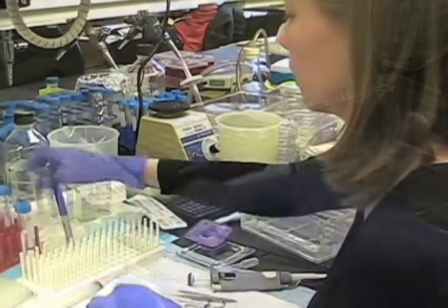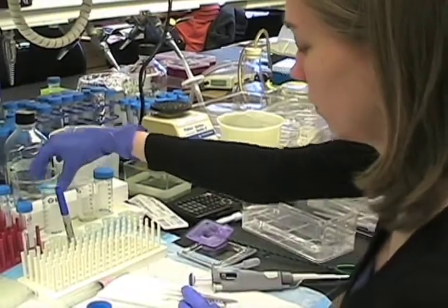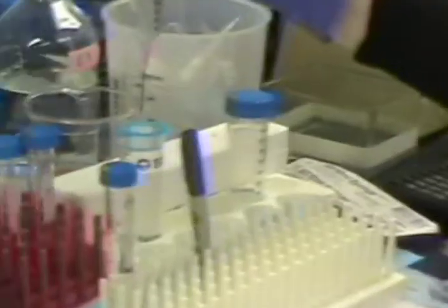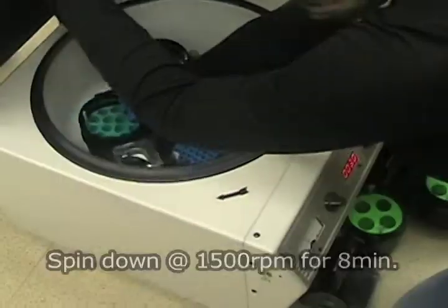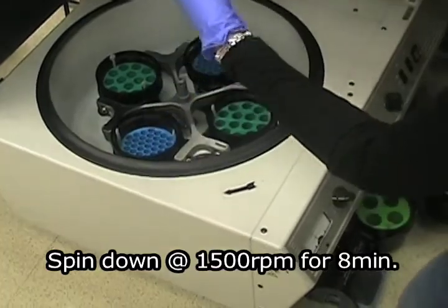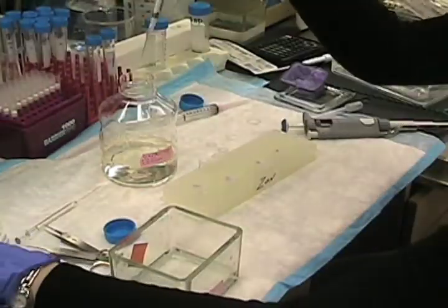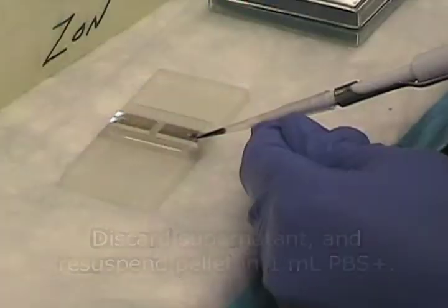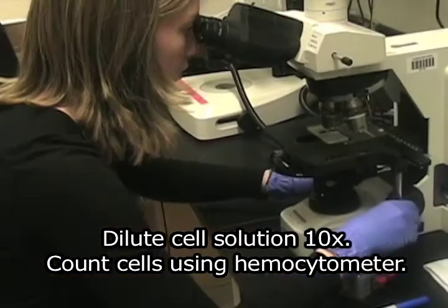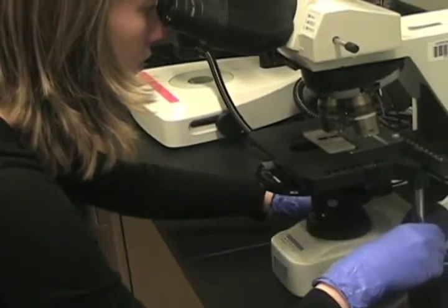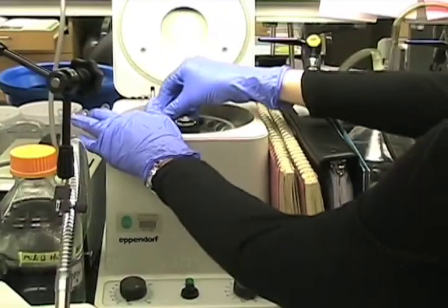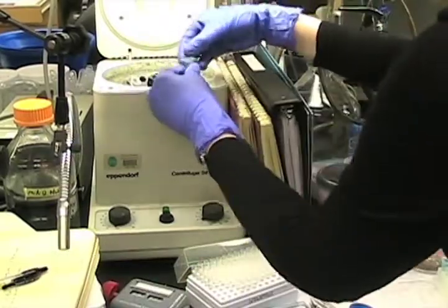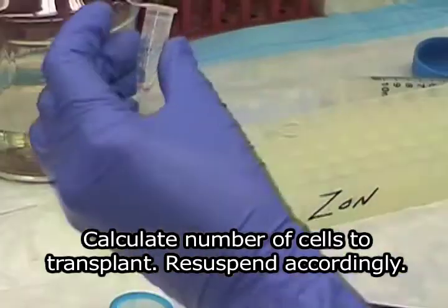Use a 40 micron cell strainer. Strain the cells, and that will catch any big pieces that you have. Pour out, resuspend in 1 ml PBS plus. Count cells. Calculate number of cells to transplant.